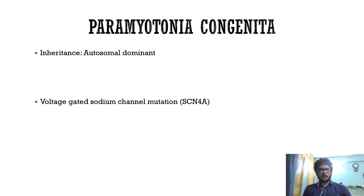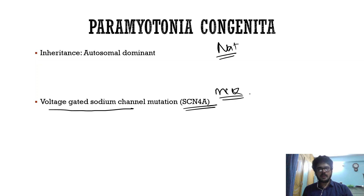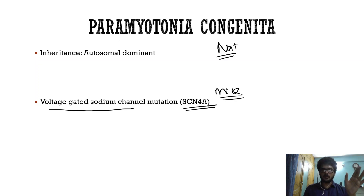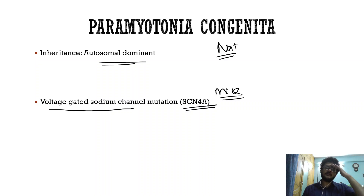First, coming to paramyotonia congenita. This is a sodium channelopathy. It requires a mutation of the voltage-gated sodium channel, that is SCN4A — an MCQ question. Like other channelopathies, the inheritance is autosomal dominant. Most channelopathies are autosomal dominant, with the exception of the Becker variant of myotonia congenita, which is autosomal recessive.